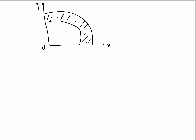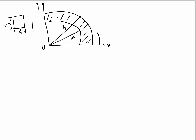Looking at the cross-section: the inner radius is a and outer radius is b, so the thickness is b−a and the height (or width) is h. The angular coordinate phi spans the cross-section. The boundary conditions are: V at phi=0 is grounded (V=0), and V at phi=π/2 equals V₀.